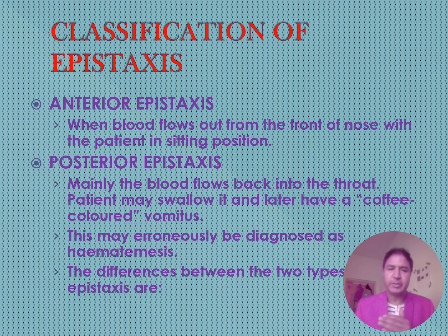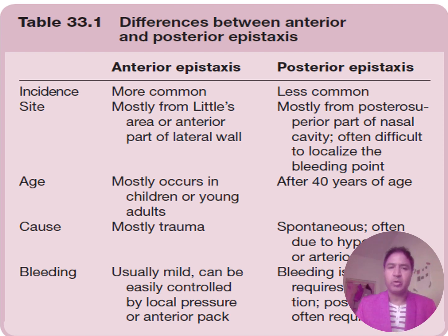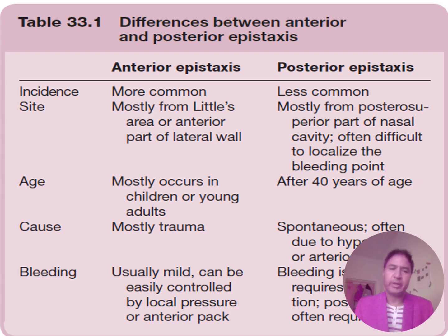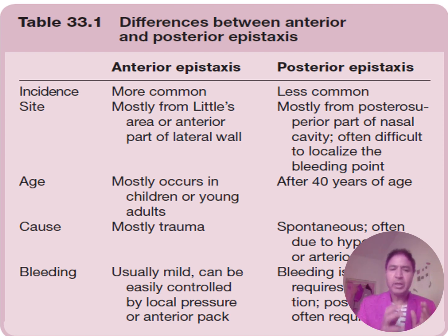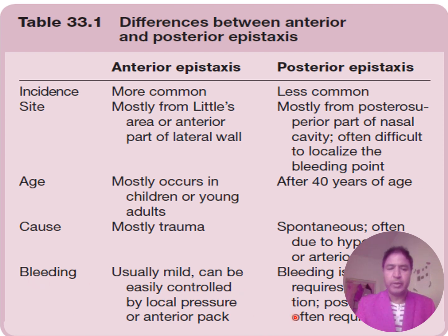The differences between anterior and posterior epistaxis: anterior epistaxis is more common; posterior is less common. Anterior bleeds mostly from the Little's area and anterior part of the lateral wall; posterior bleeds from the posterior nasal cavity, often difficult to localize. Anterior occurs mostly in children or young adults; posterior occurs after age 40, often due to hypertension and arterial bleeding. Anterior bleeding is usually mild, controlled by local pressure; posterior bleeding is profuse and may require posterior nasal packing.